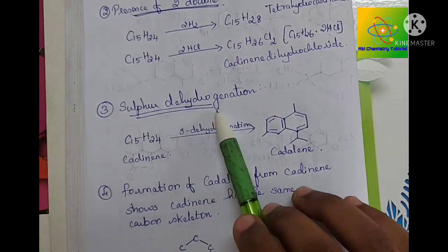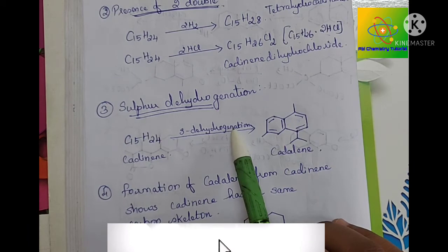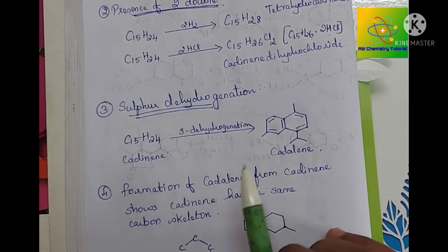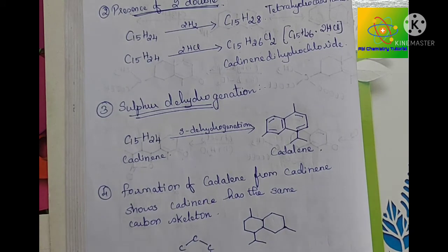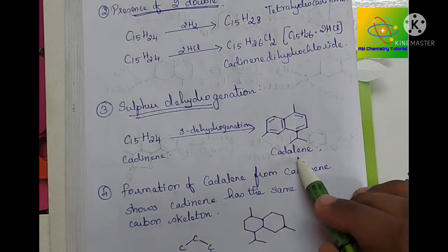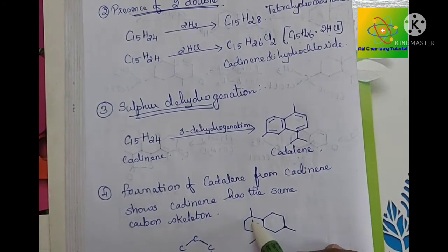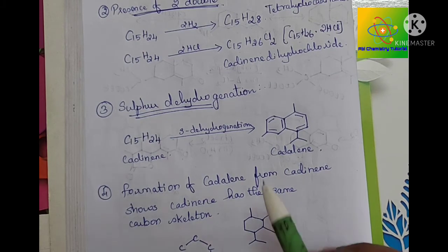The next is sulfur dehydrogenation. Cadinine on sulfur dehydrogenation gives cadiline — a few more hydrogen atoms are removed from cadinine to form cadiline. We know the structure of cadiline, and the formation of cadiline from cadinine shows that cadinine has the same carbon skeleton as cadiline. We are going to separate the carbon skeleton from cadiline — this is the carbon skeleton. Our cadinine also has the same carbon skeleton with two double bonds.